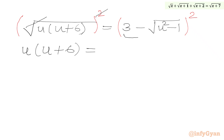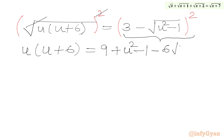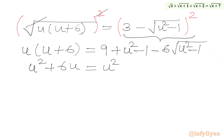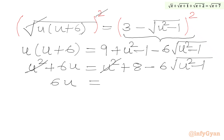Squaring both sides again: u(u+6) expands to u² + 6u on the LHS. On the RHS we apply (a - b)² formula: 3² = 9, plus (√(u²-1))² = u²-1, minus 2·3·√(u²-1) = -6√(u²-1). So the RHS is 9 + u² - 1 - 6√(u²-1) = u² + 8 - 6√(u²-1). Subtracting u² from both sides gives 6u = 8 - 6√(u²-1).